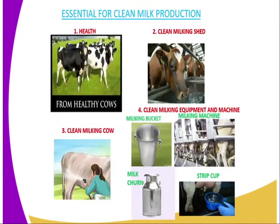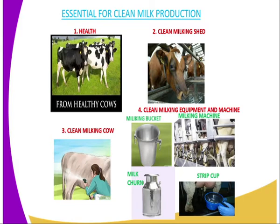Now we go to the essentials for clean milk production. The first one, the milking herd should be healthy. If you have a healthy milking herd, the milk which is produced will also be clean and of high quality. Then we have the second: a clean milking shed. The place where the milking exercise takes place should be washed, cleaned, and tidy.